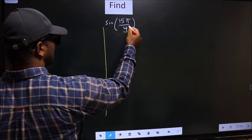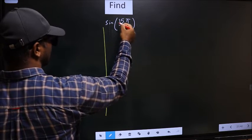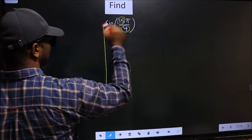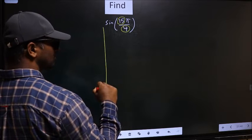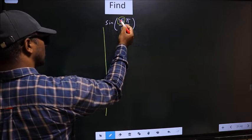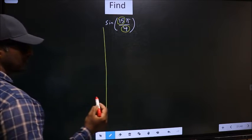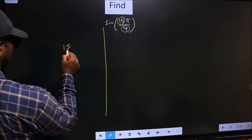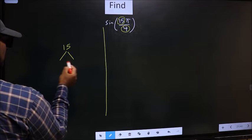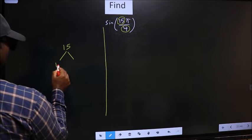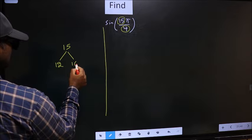In the denominator we have 4 and in the numerator we have 15. Now you should check 15 is close to which multiple of 4. What I mean is 15, and here you write multiples of 4, that is 12 and 16.